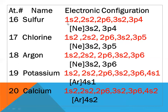Sulfur, atomic number sixteen: configuration 1s2 2s2 2p6 3s2 3p4. We replace the inner subshell configuration with neon, giving a valence configuration of [Ne] 3s2 3p4. Chlorine, atomic number seventeen: configuration 1s2 2s2 2p6, which is the inner shell represented by neon. Valence configuration is [Ne] 3s2 3p5.